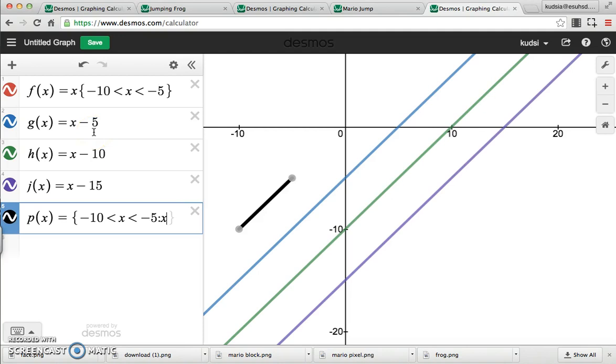This is going to be our piecewise function. That's my domain and then colon and my function x. That's the first part of my piece, that first piece of my piecewise. So, that's from negative 10 to negative 5. Let's go now from negative 5 less than x less than 0.